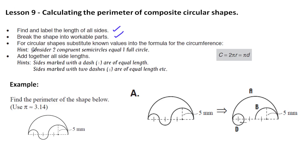For circular shapes, substitute known values into the formula for the circumference. Because remember, we're working with perimeter, and the perimeter of a circle is a circumference. And the point that I need to stress here is that we're often working with parts of a circumference.